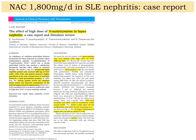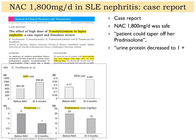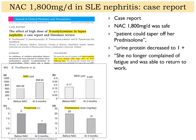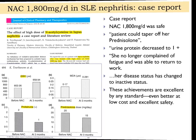Here's a quick case using NAC in the treatment of SLE nephritis. This is a case report where NAC at 1800 milligrams per day was proven safe. The patient was able to taper off prednisone, urine protein decreased from 2+ down to 1+, showing actual improvement in kidney function. She no longer complained of fatigue, was able to return to work, and her disease status changed from active to inactive — all with a simple nutritional supplement.